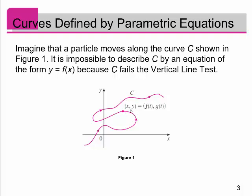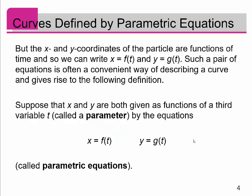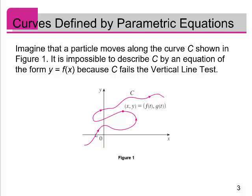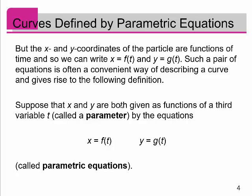Notice I'm going to pick a point on the curve — this x comma y point — and I'm going to denote it as being equal to f of t comma g of t. So I'm going to take the x variable and define it as a function: the x value of the particle is defined by f of t, and the y value on this curve is defined by g of t. The x and y coordinates of the particle are functions of some time variable. So in the first second the particle might be here, then after two seconds it might be here because it's moving, and it's going further as time goes on. So we can write x equal to f of t and y equal to g of t.